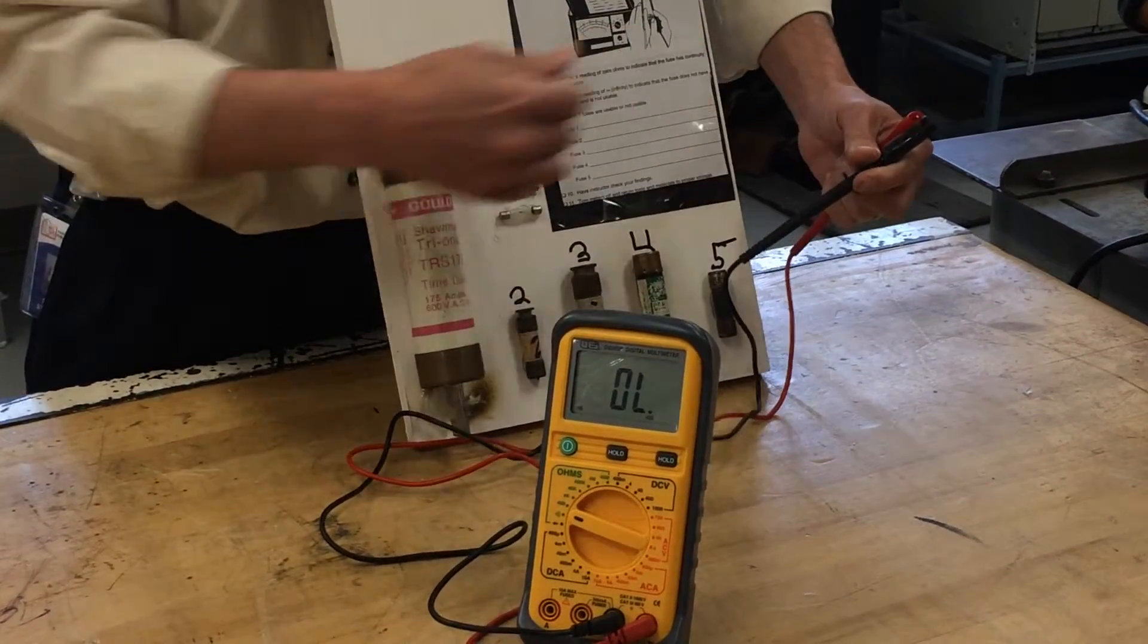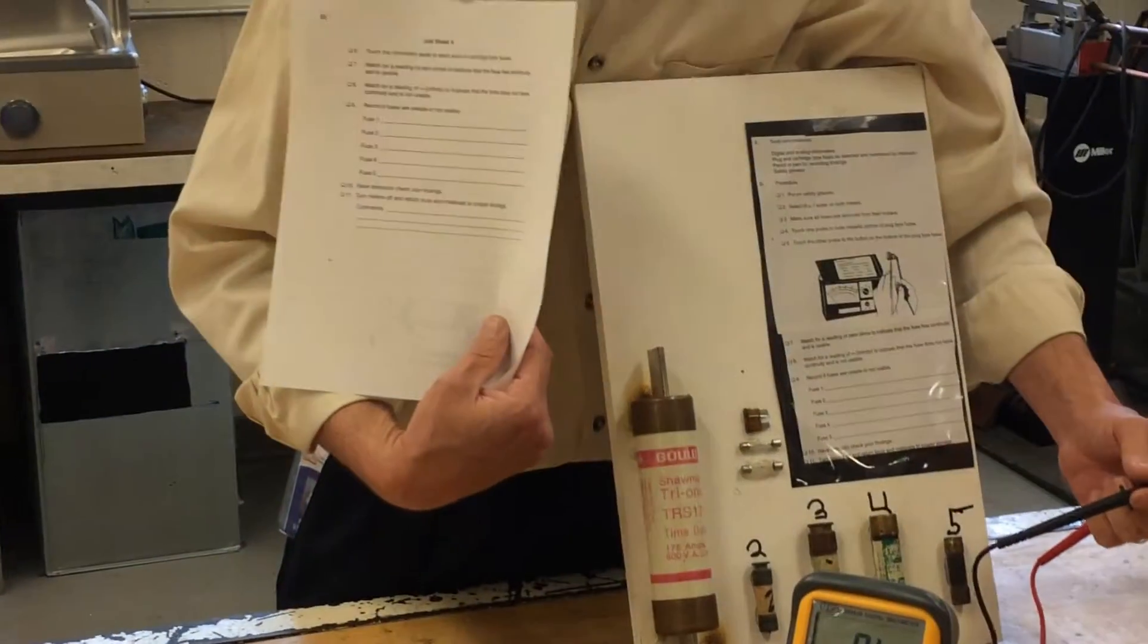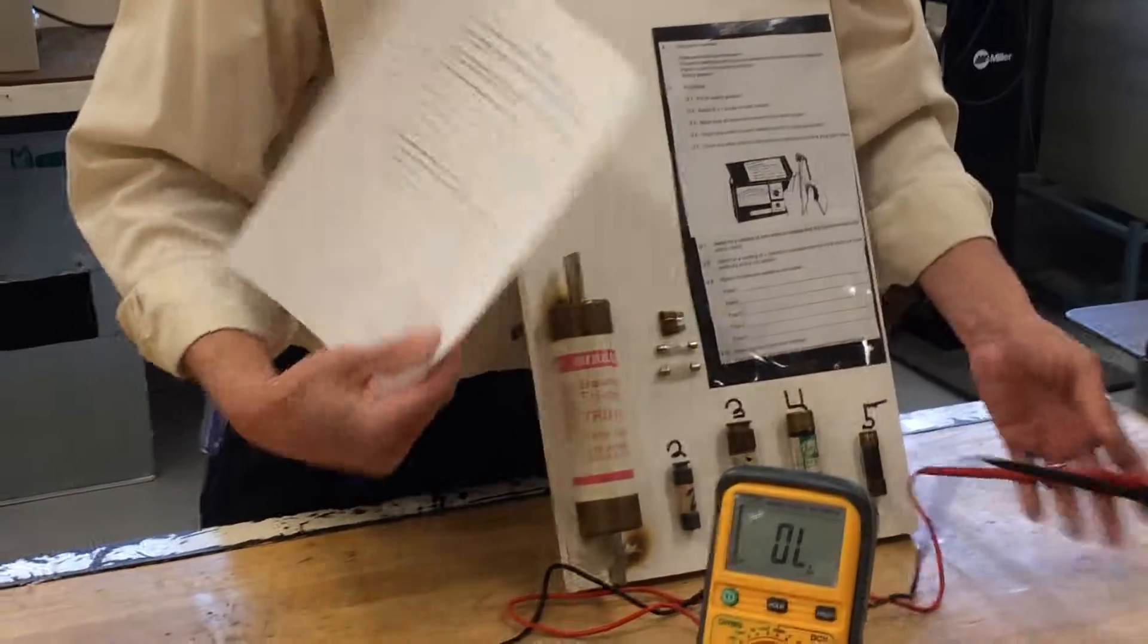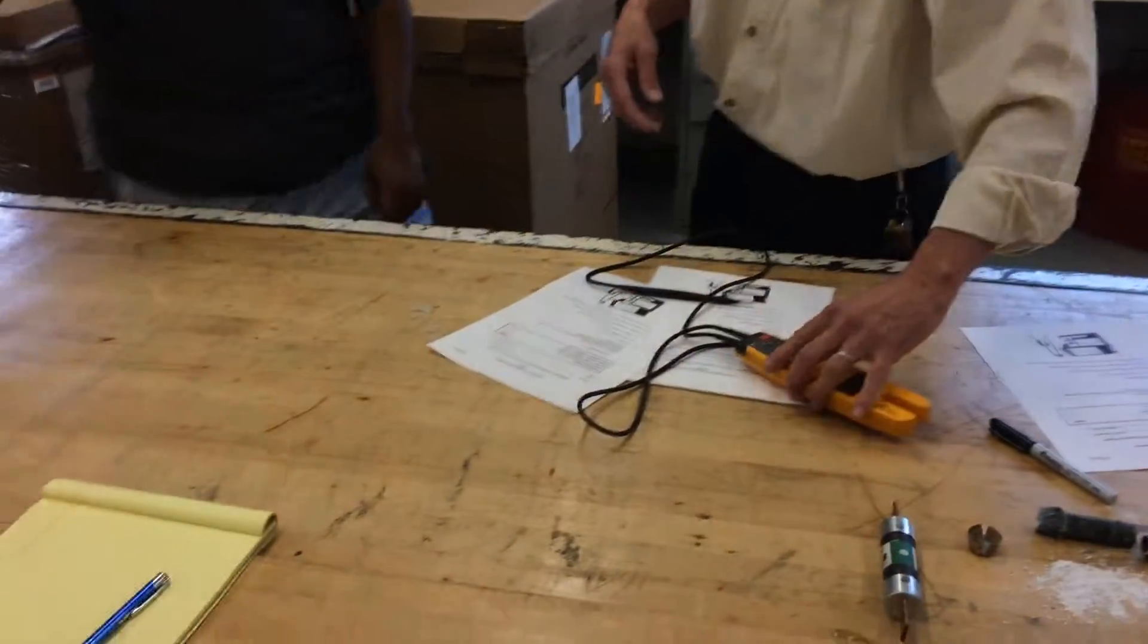So you will go through, and you will either write usable or not usable on the assignment sheet here for inspecting the fuses. Okay. That's the next assignment. All right, I also got for you guys up here - we're done.